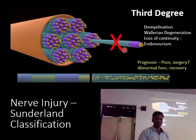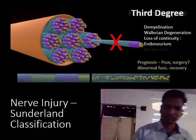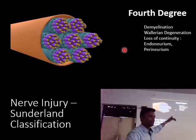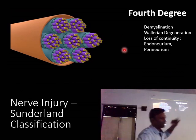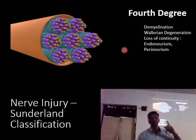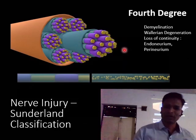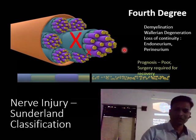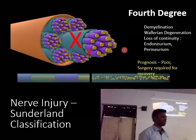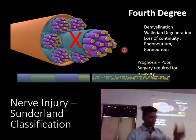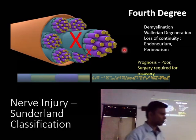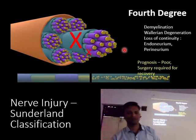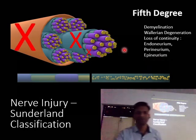Recovery in third degree is poor and abnormal function may also occur. In fourth degree, we go one level up: there is demyelination, Wallerian degeneration, and loss of continuity of both the endoneurium and the perineurium. Prognosis is very poor and surgery is surely required — re-suturing the perineurium is needed for an acceptably good recovery.